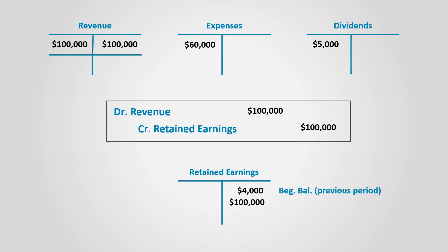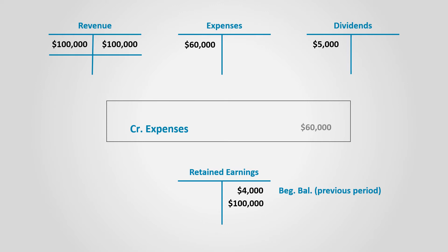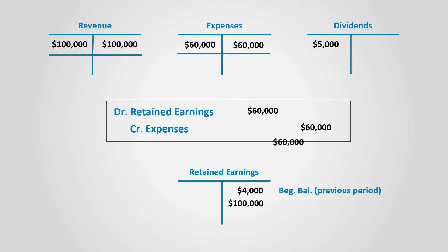After posting this entry, the revenue account has a zero balance and retained earnings has an additional $100,000. To close expenses, we credit it by the same amount of its debit balance. Expenses are credited by $60,000, and since expenses decrease retained earnings, retained earnings will be debited by this amount. After posting this entry, expenses are closed since their balance becomes zero, while retained earnings is reduced by the amount of expenses.